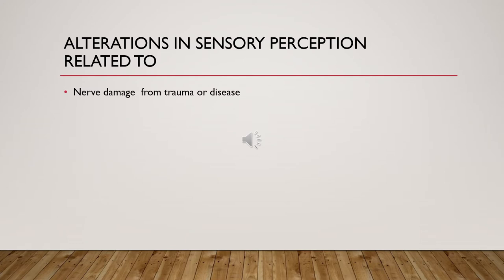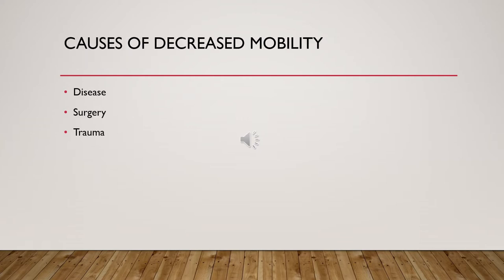Another nursing diagnosis would include alterations in sensory perception related to nerve damage from the trauma or whatever the disease might be. Causes of decreased mobility can be from diseases — many of which are discussed in chapter 50 — but we're going to focus more on the trauma aspect and surgical aspect of causes for decreased mobility.